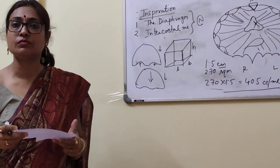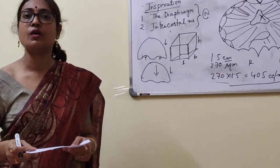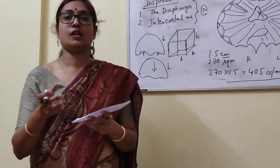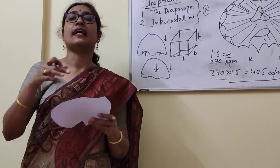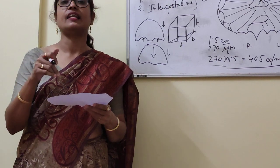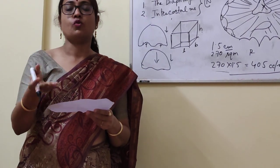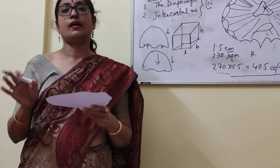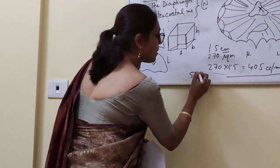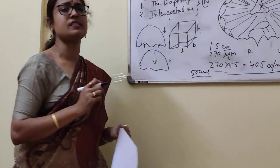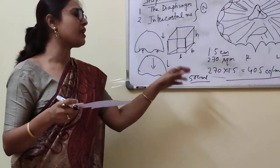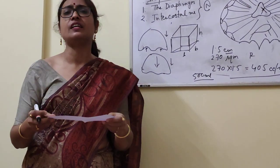Tidal volume is the amount of air that is drawn in or exhaled due to normal respiration. Among the 500 mL of tidal volume, about 400 mL comes from only the descent of the diaphragm.